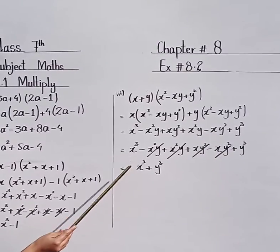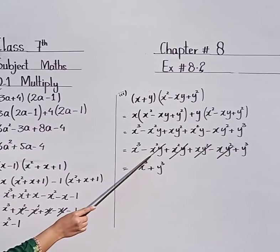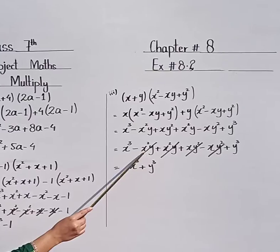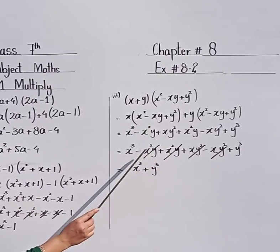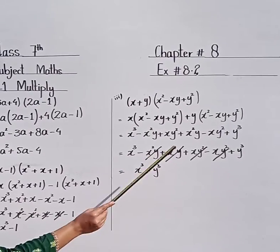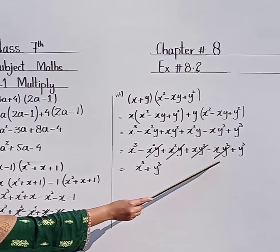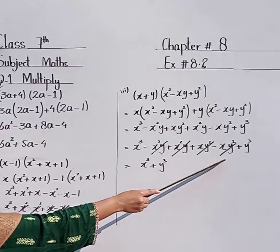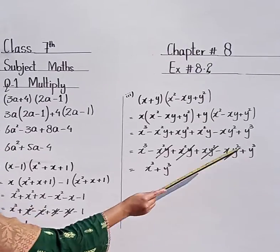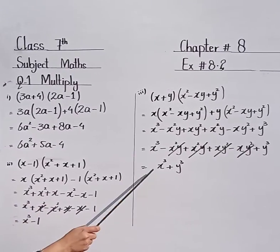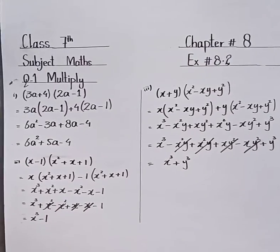Now x cubed remains the same — it is a single term. Minus x squared y plus x squared y — both are the same with opposite signs, so these are cancelled. Plus x y squared and minus x y squared — these are also cancelled. Plus y cubed is left. So the answer is x cubed plus y cubed.